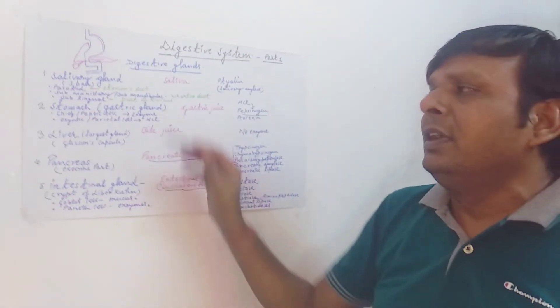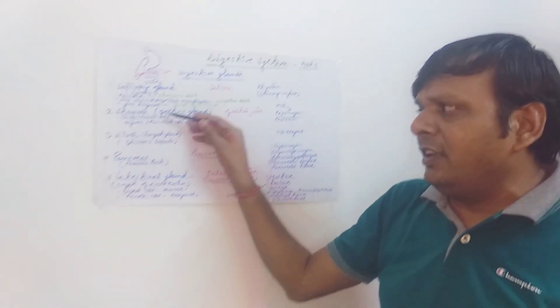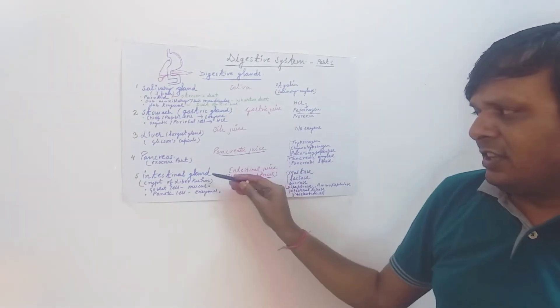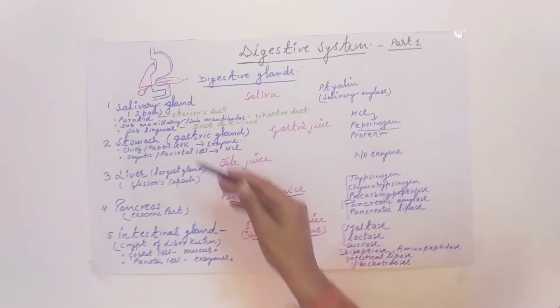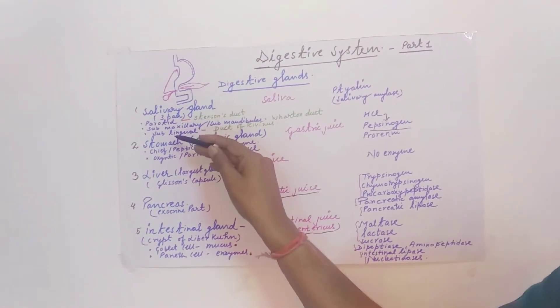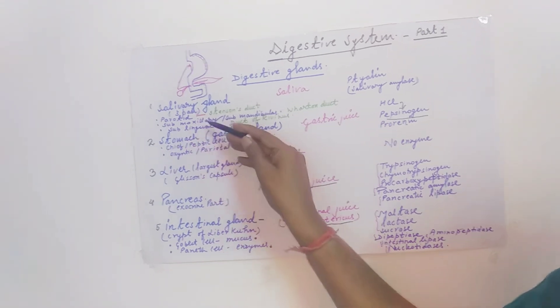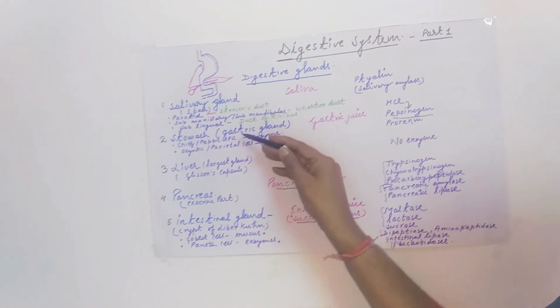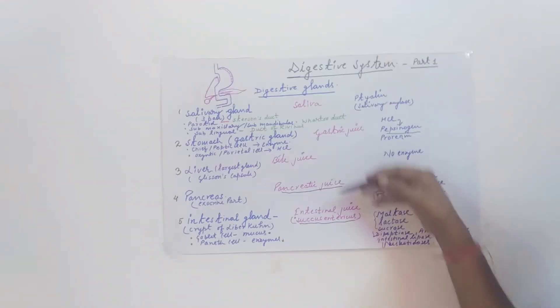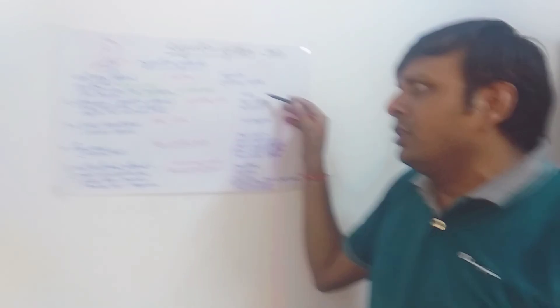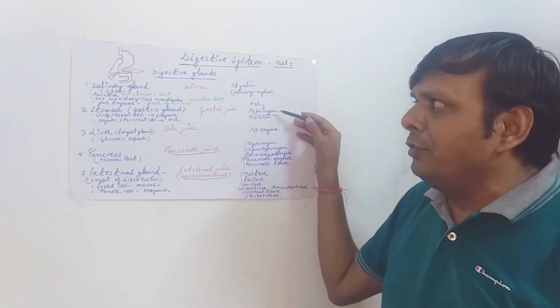Remember the names of the digestive glands, the type of secretion, and the names of their enzymes: salivary gland, stomach (gastric gland), liver, pancreas, and intestinal gland with its crypt of Lieberkühn. The three salivary glands are parotid, submaxillary, and sublingual. Please like, subscribe, and share the channel. Thank you all.